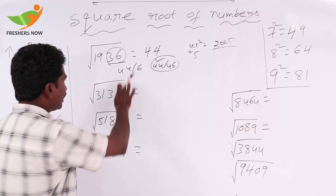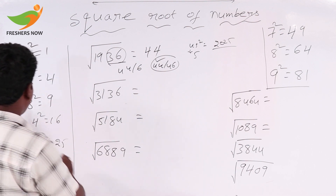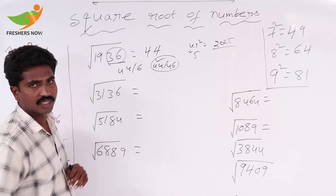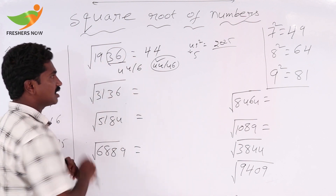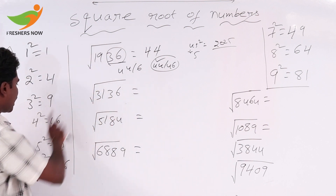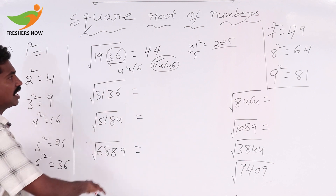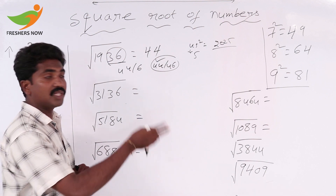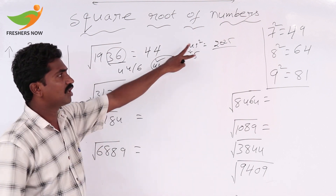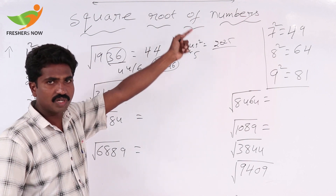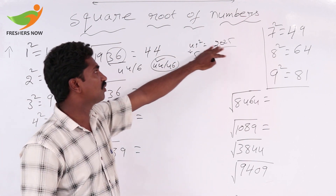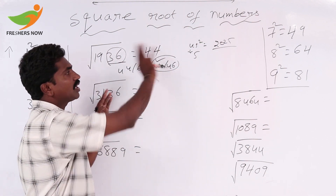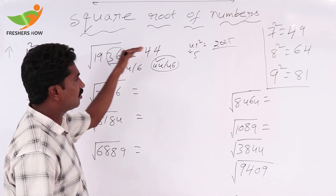To summarize: units place value is 6, so 4 squared is 16 and 6 squared is 36 — units place value is either 4 or 6. Keep 2 digits away: 19 is there. 4 squared is 16, 5 squared is 25, so we take lesser value 4. The answer is either 44 or 46. Since 45 squared is 2025 and 1936 is less than 2025, we take 44. Square root of 1936 is 44.